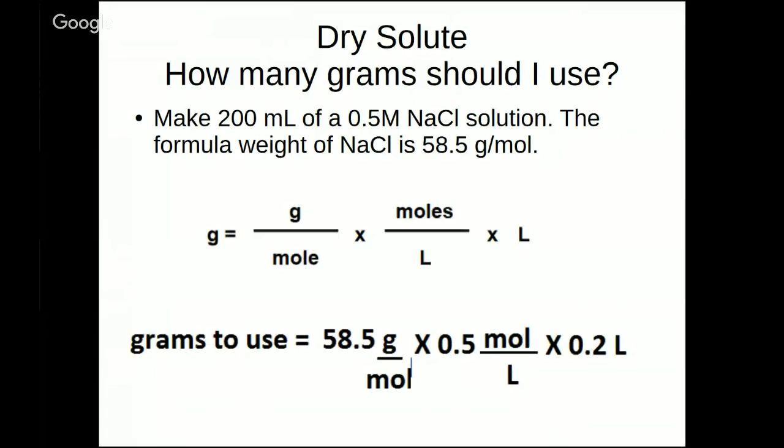So let's look back at this problem. Make 200 mL of a 0.5M NaCl solution, and you're given the formula weight is 58.5 g/mol. Let's put these numbers into our formula. So grams to use equals my formula weight. That's easy. 58.5. No converting needed there. My molarity is next. Molarity I'm given is already in molar 0.5. So I can just put that straight into the formula. 0.5 moles per liter.